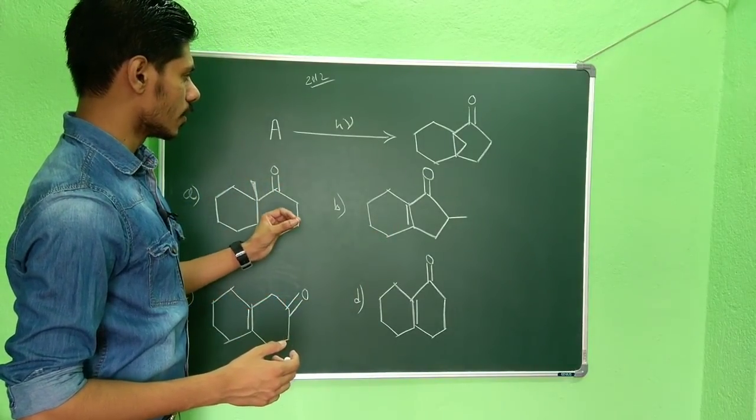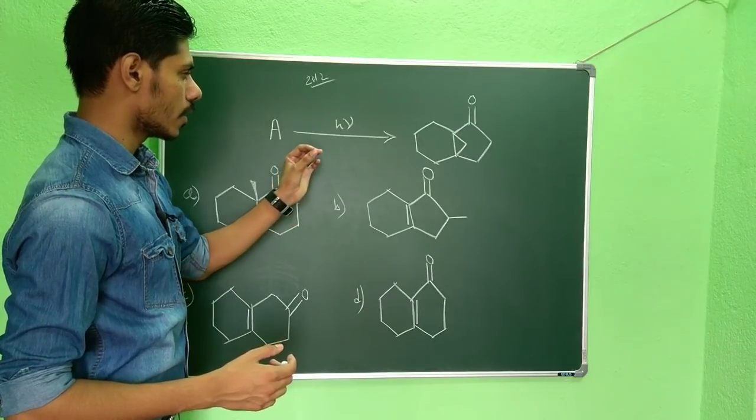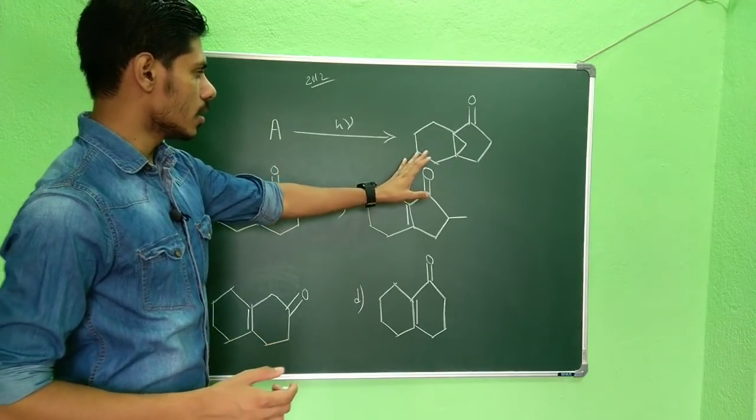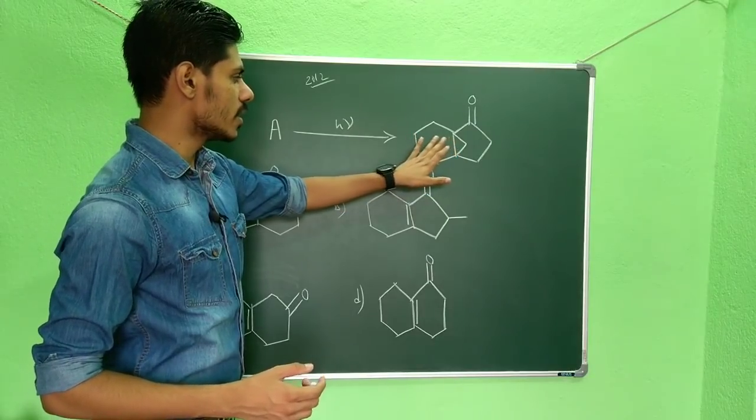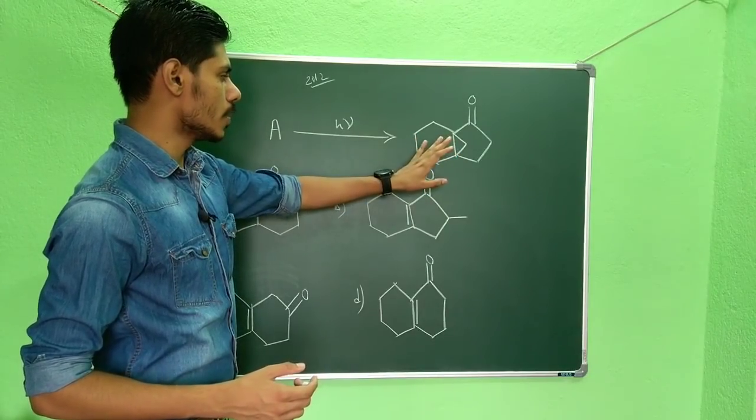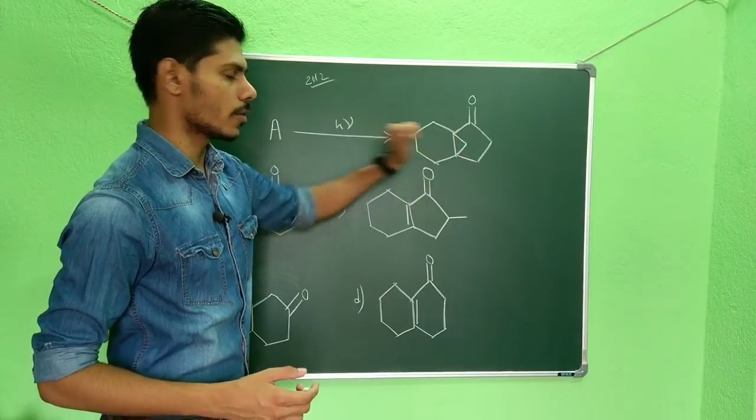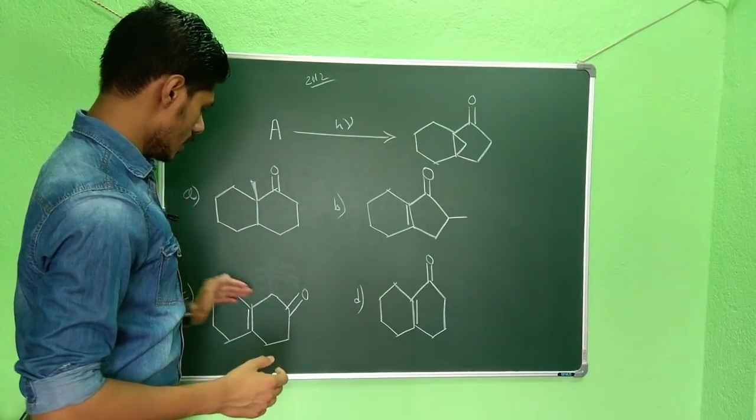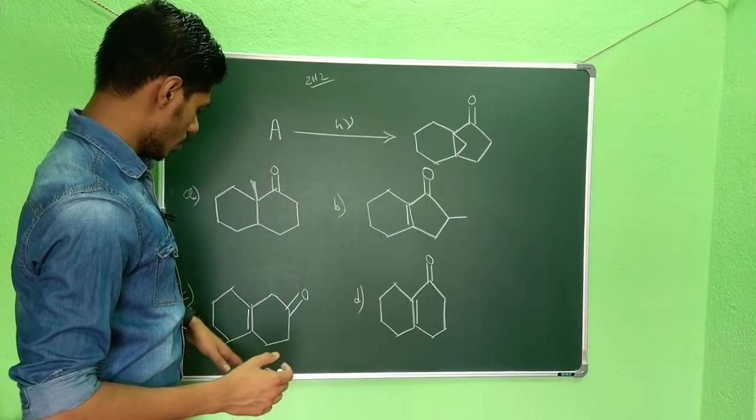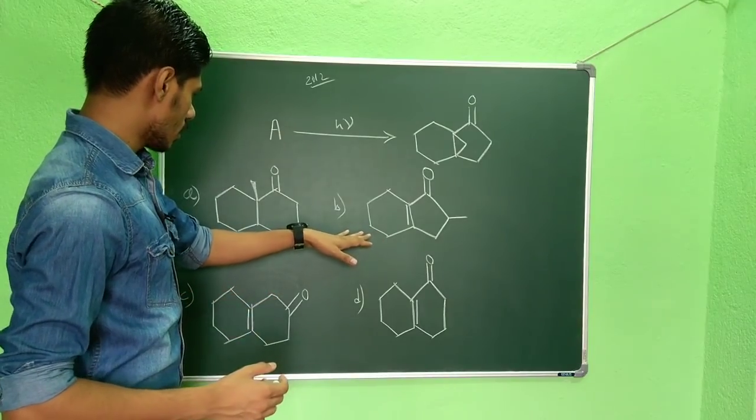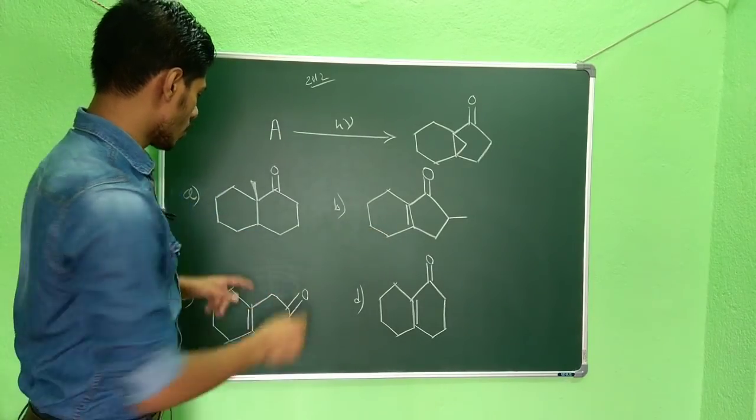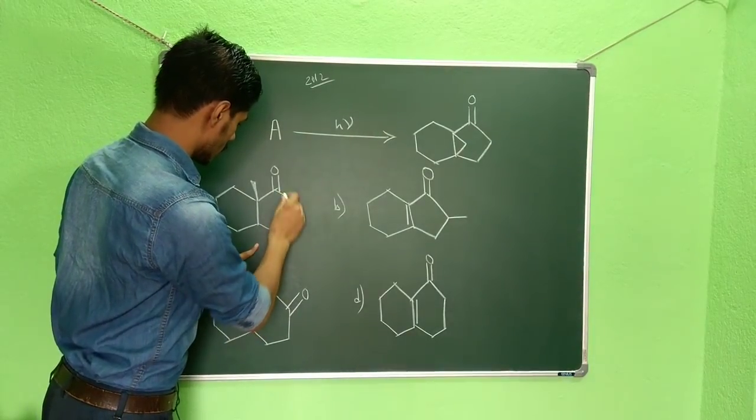Now you can see the feature of this particular question is in the product you have two or three rings actually fused, but the two major rings are one six-membered and one five-membered ring. And in your starting material, so here you can see in this example, so actually it was this one.